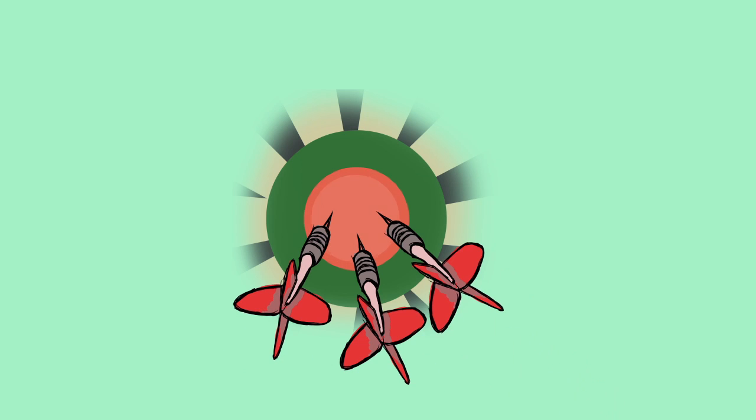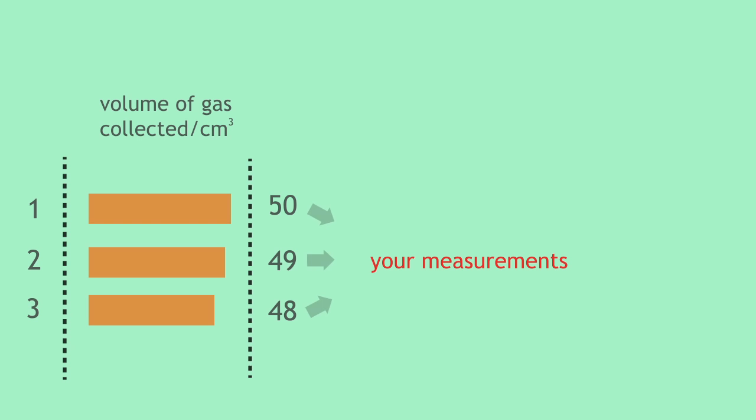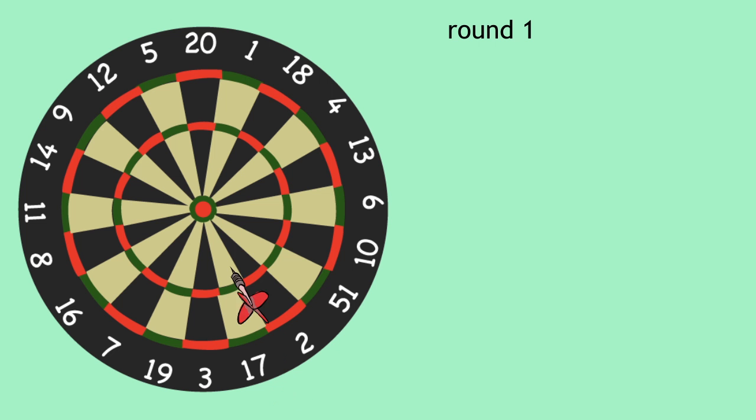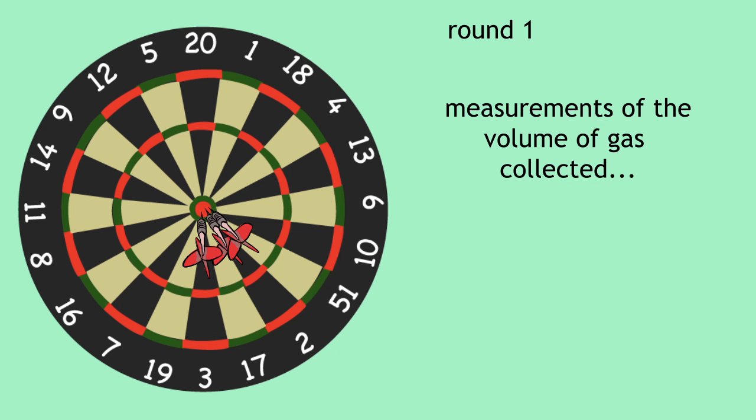If you look at the darts again for this throw, there's hardly any difference between where all three darts have landed in the bullseye. And there's very little difference between your measurements and the average. This makes this round's throw and your measurements of the volume of the gas collected precise.